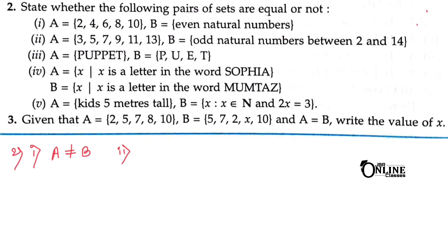Second pair: A = {3, 5, 7, 9, 11, 13} and B = odd natural numbers between 2 and 14. The odd natural numbers between 2 and 14 are 3, 5, 7, 9, 11, and 13 — exactly equal to set A. So A equals B.